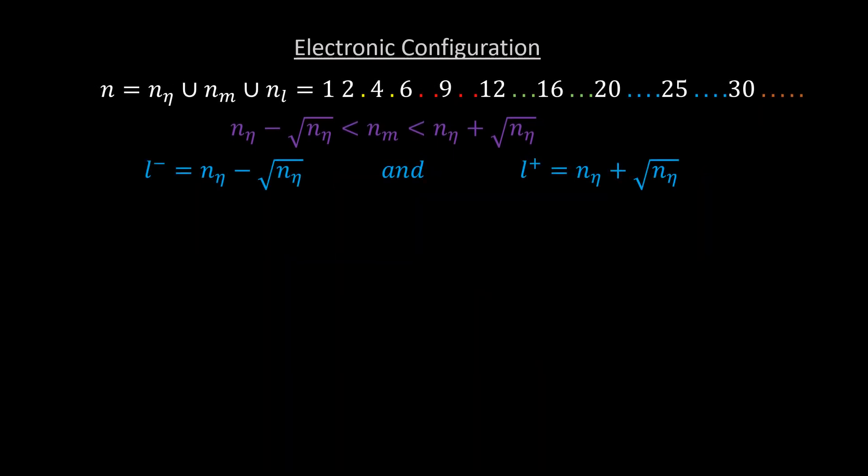Therefore, the rule for assigning electronic configuration, which is the same as the rule for reading the above sequence for n, is as follows. That is, for any arbitrarily chosen n eta, the corresponding nl is l minus, and the nm's are the values between l minus and l plus.